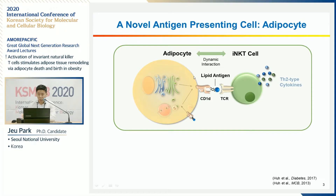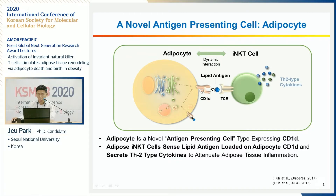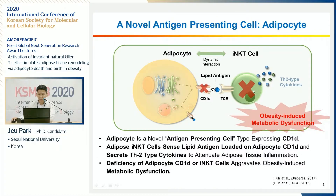This cartoon summarizes our group's previous findings about the relationship between iNKT cells and adipocytes. We found that adipocytes are a novel antigen-presenting cell type expressing CD1D. We also found that lipid antigens of adipocytes activate iNKT cells, and activated iNKT cells secrete TH2 type cytokines such as IL-4 and IL-10. Deficiency of iNKT cells or depletion of adipocyte CD1D aggravates obesity-induced metabolic dysfunction.